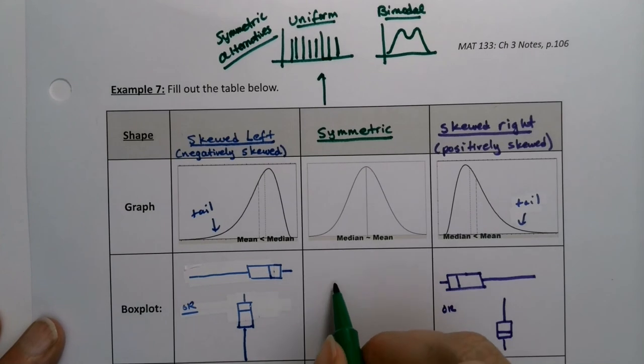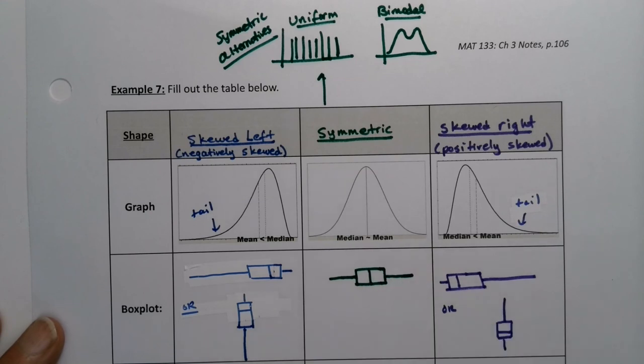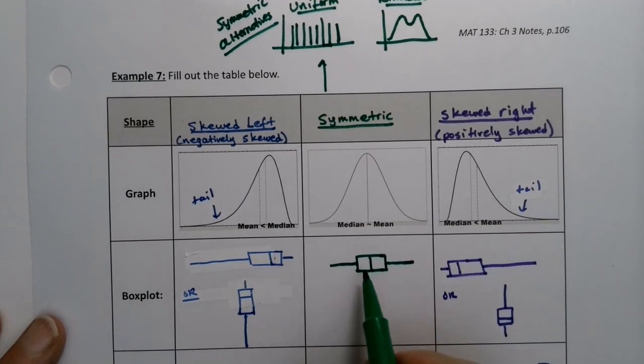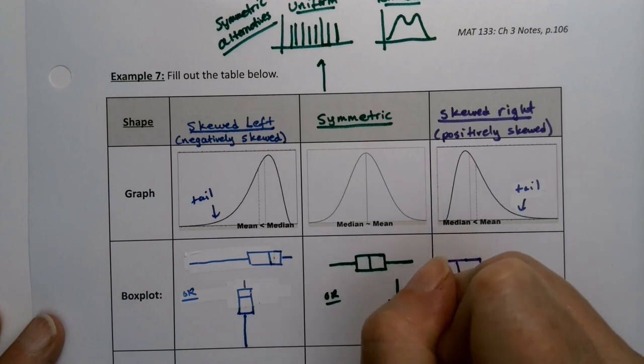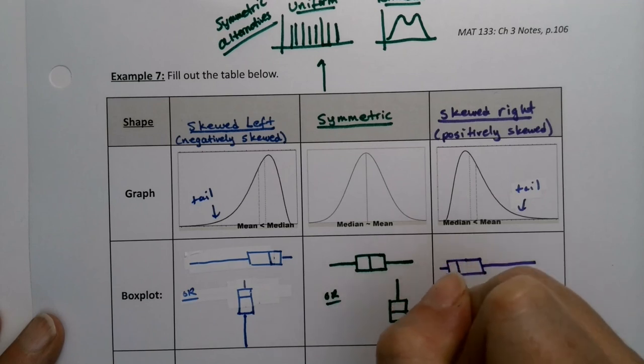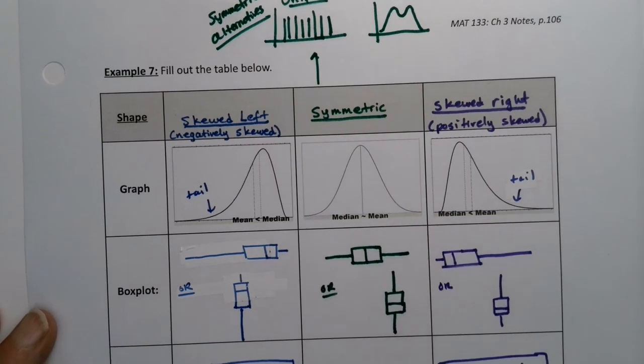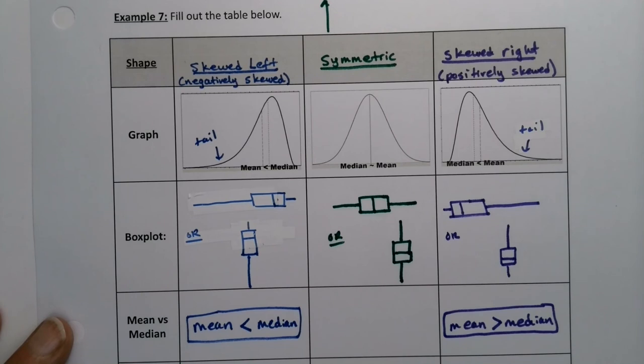But if they are symmetric, what I do know is that the box and whisker plot should be even from both sides, roughly. So the two box halves should be roughly the same, the two whiskers should be roughly the same. If I draw it vertically, I'll make a box and a whisker like that. So roughly the same, roughly equal.